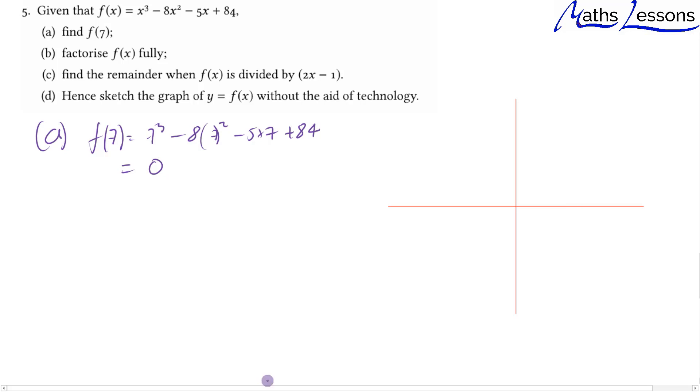So f(7) equals 0. By the factor theorem, we must have (x - 7) as a factor. Therefore f(x) equals (x - 7) times something. We need x times x² to get the x³ term, and we need -7 times -12 to get the plus 84.